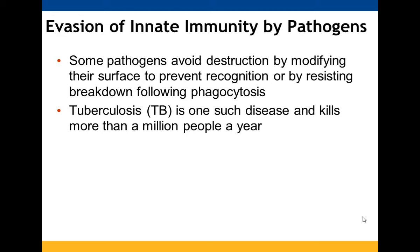Innate immunity is the first line of defense. However, pathogens have evolved ways to avoid being recognized — they change their surface or resist phagocytosis. Tuberculosis is one disease caused by a pathogen that avoids destruction.